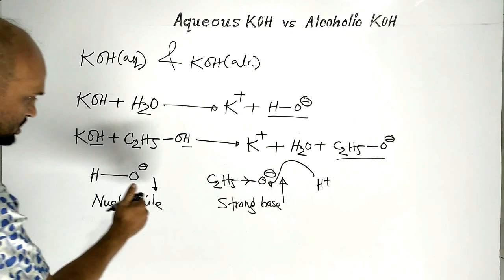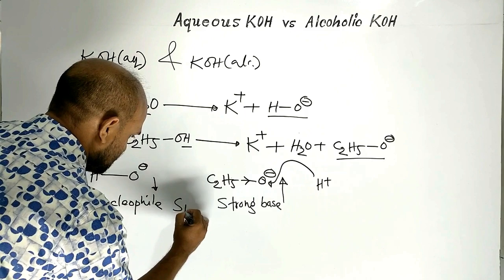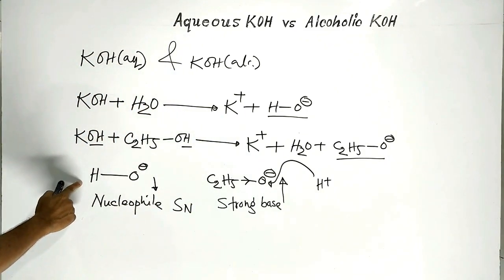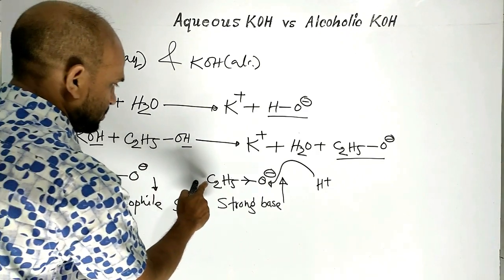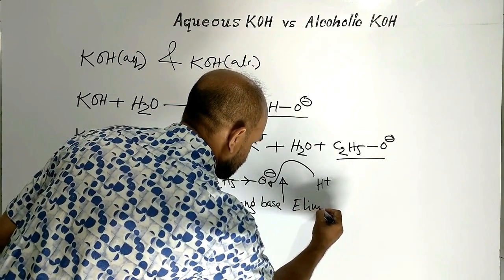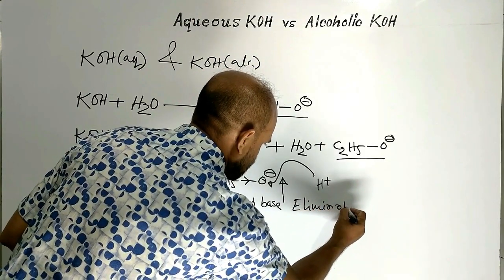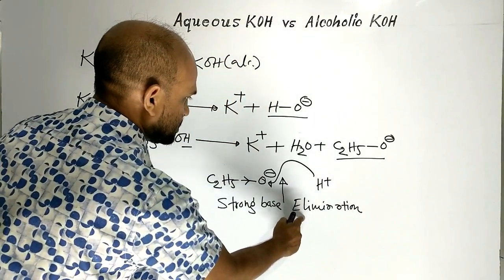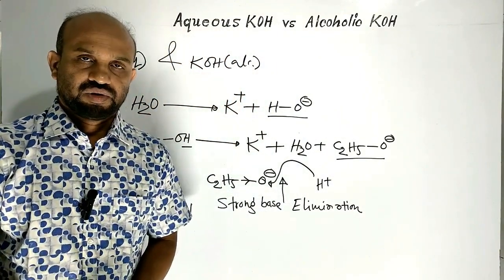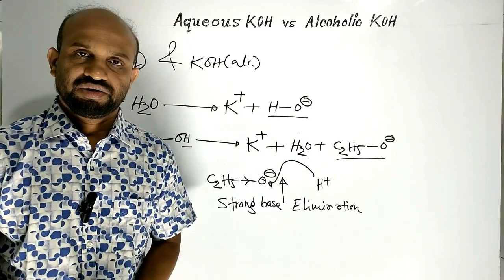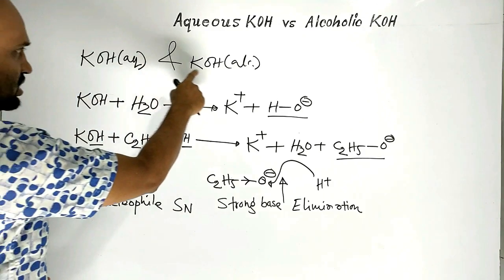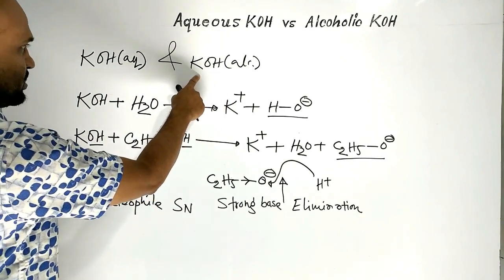Hydroxide ion causes a nucleophilic substitution reaction when reacting with alkyl halide. But ethoxide ion causes an elimination reaction when reacting with alkyl halide. Now let us see the reactions of alkyl halide with aqueous and alcoholic solutions of potassium hydroxide.